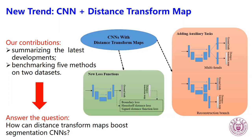Ultimately, we want to answer the question: how can digital transform maps boost segmentation convolutional neural networks? Thank you.